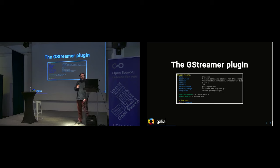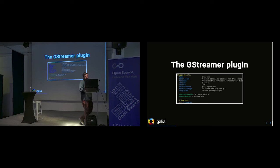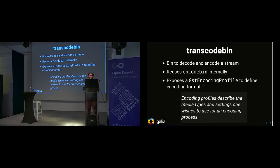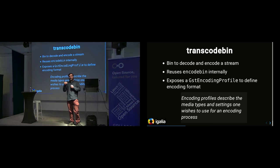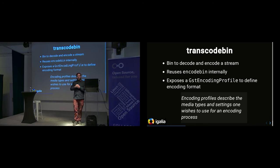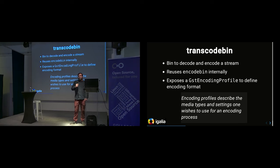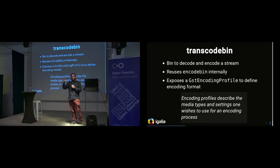We built GStreamer plugins which expose two GStreamer elements. First, Transcode Bin, which has one sink pad and one source pad. It takes the stream in, does everything for the transcoding, and you have the source pad where you can plug whatever sink you want after that. Transcode Bin reuses encode bin — it plugs a decode bin and then an encode bin, which builds the internal pipeline to do the encoding itself.